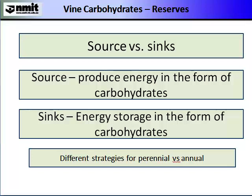When talking about carbohydrates, you will often hear the terms sources and sinks, which describe the functional use of the carbohydrate. A source is where a carbohydrate is being supplied — either from within the vine or produced by photosynthesis. Sinks are where energy is stored in the vine in the form of chemical energy, which we know as carbohydrates. It is important to realise that different strategies are undertaken by different types of plants — the carbohydrate partitioning of an annual plant such as a vegetable is quite different to that of a grapevine, which is a perennial.